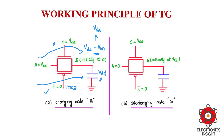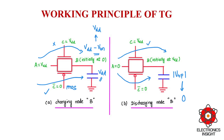Now let us understand how the transmission gate is capable of passing strong zero. The source node is now set to A equals zero, and the control signals remain the same: NMOS control signal is VDD and PMOS control signal C-bar equals zero, so the transmission gate is enabled. When A equals zero passes through PMOS, PMOS is not capable of passing strong zero — it passes only a weak zero, so the capacitance charges up to mod VTP only. However, passing through NMOS, which is a strong pull-down network, it pulls down this mod VTP level all the way to zero. Therefore strong zero is passed through NMOS and not through PMOS.